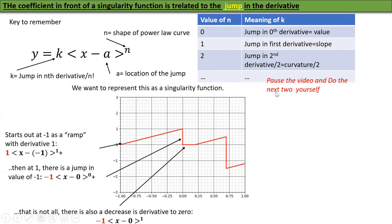Pause the video and do the next two jumps yourself — there's a jump at x=0.2 and a jump at x=0.7. Try it yourself. If you don't do it, you're only cheating yourself. It doesn't matter if you get it wrong; there's no penalty for being wrong here. You will not learn where you made a mistake until you try it yourself. Go on, try it. I'm going to continue now, hoping you've tried it.